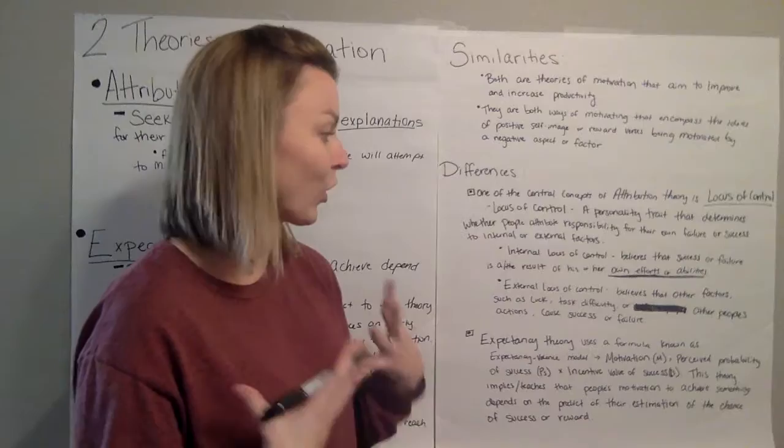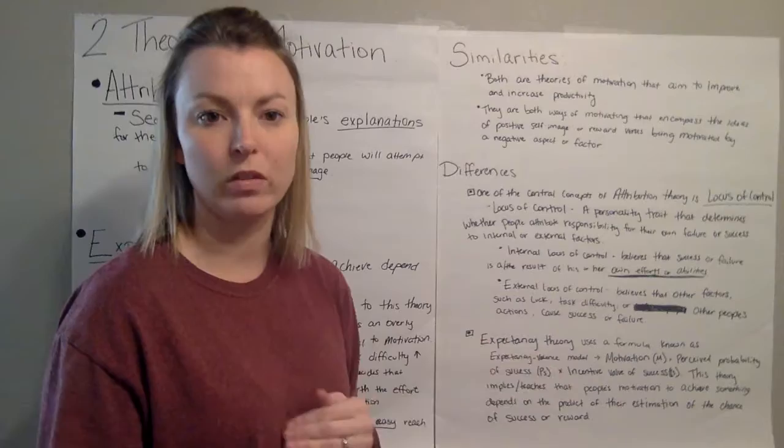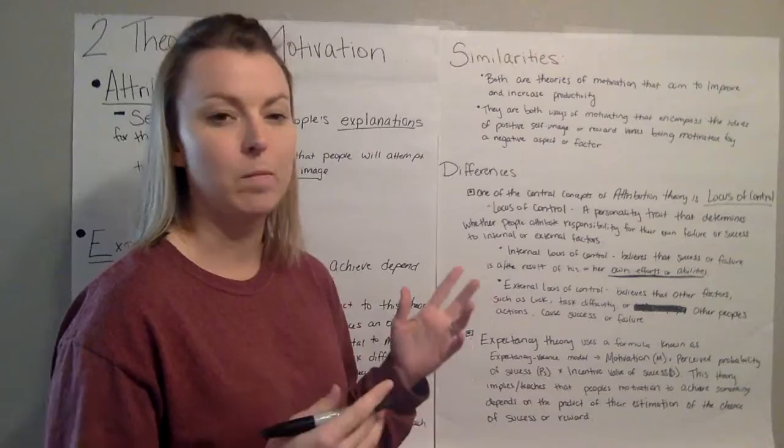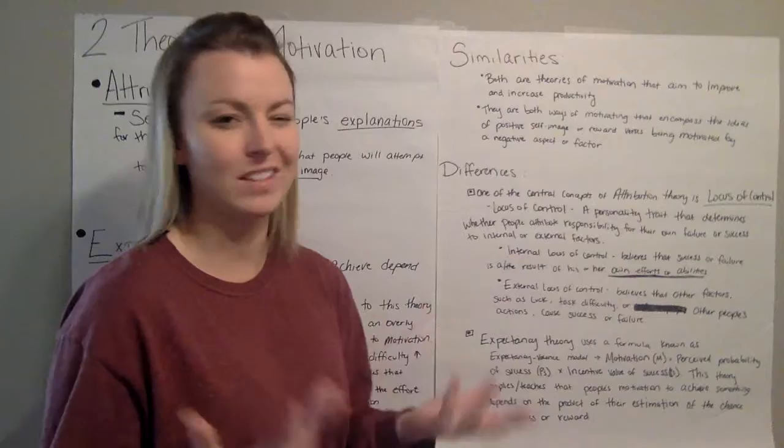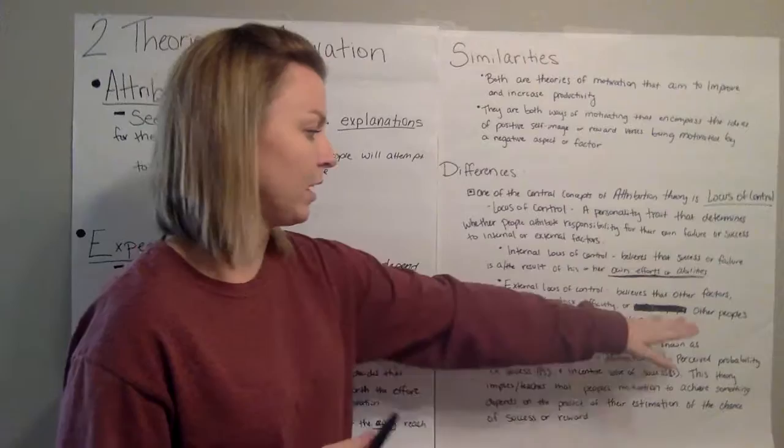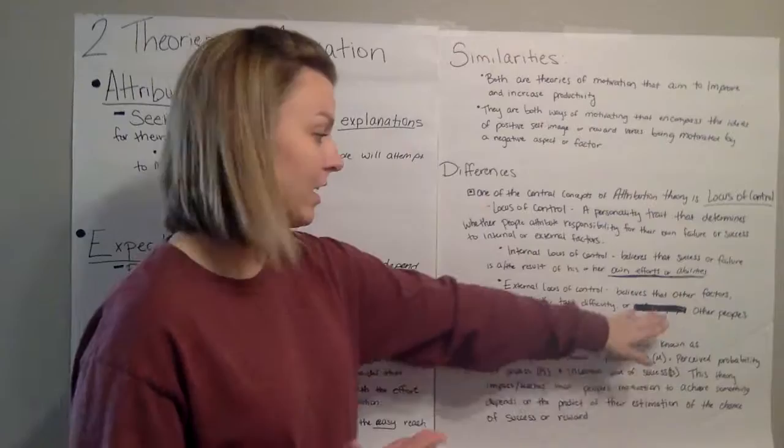And we often see in an internal locus of control personality better grades and higher test scores, but they also shoulder things that they may not have any control over. And an external locus of control personality believes that other factors such as luck, task difficulty, or other people's actions are actually what caused the success or failure.